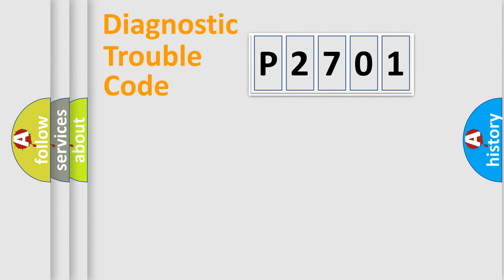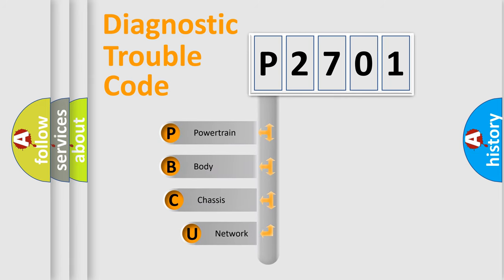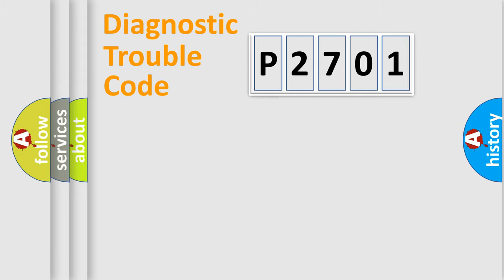Let's do this. First, let's look at the history of diagnostic fault code composition according to the OBD2 protocol, which is unified for all automakers since 2000. We divide the electric system of automobile into four basic units: Powertrain, Body, Chassis, and Network.